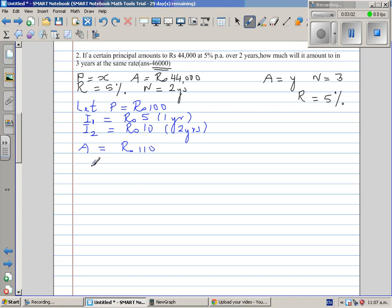So now we're going to use proportion. So let's write principal and amount. Simple proportion. So we know 100 becomes 110 rupees. Now we know that the amount is 44,000 rupees. So what is X? So it is a simple proportion. We can say X over 100 is equal to 44,000 over 110. So X is equal to 44,000 times 100 over 11. So this is X is equal to 40,000.